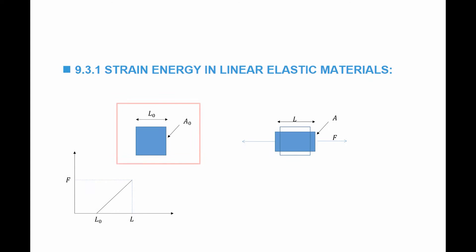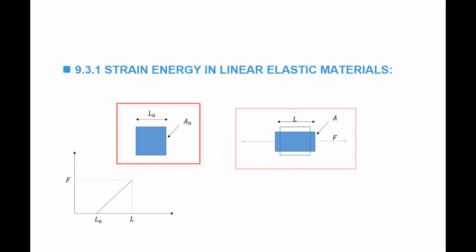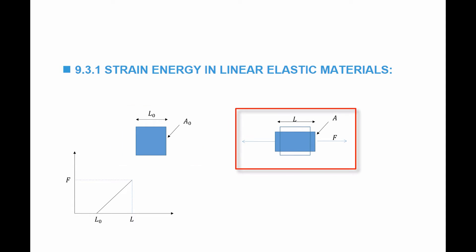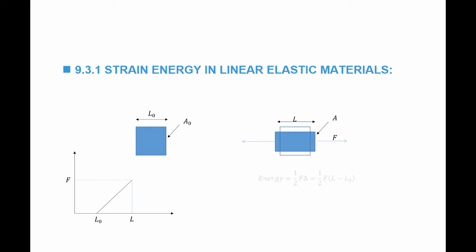If I have a linear elastic material with an area A₀ and a length L₀, and if a force is applied, the area decreases to A and the length increases to L. If this is a linear material, which means the relationship between the force and the extension is a straight line, then the energy stored is equal to half F multiplied by delta.